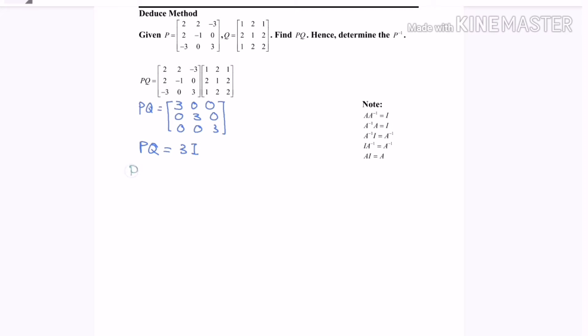So P inverse PQ equals 3 P inverse I. By referring to the notes on your right hand side, P inverse multiply with P we will have I, followed by Q equals 3. Next will be P inverse multiply with the I, so we will have P inverse.